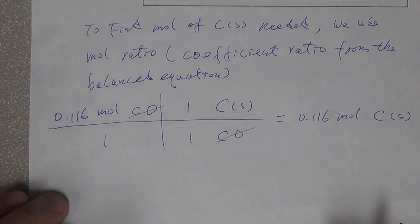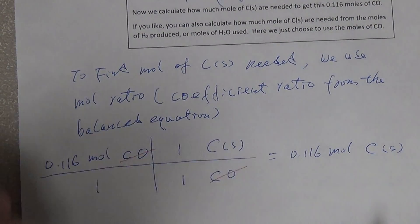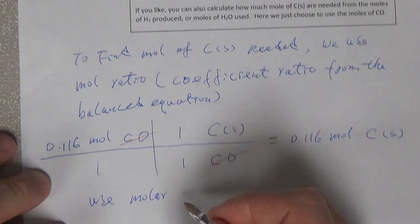So therefore just 1 and 1. The carbon monoxide comes out, we get the same amount of moles for the carbon solid. Then next you want to find those numbers in grams, we use molar mass.